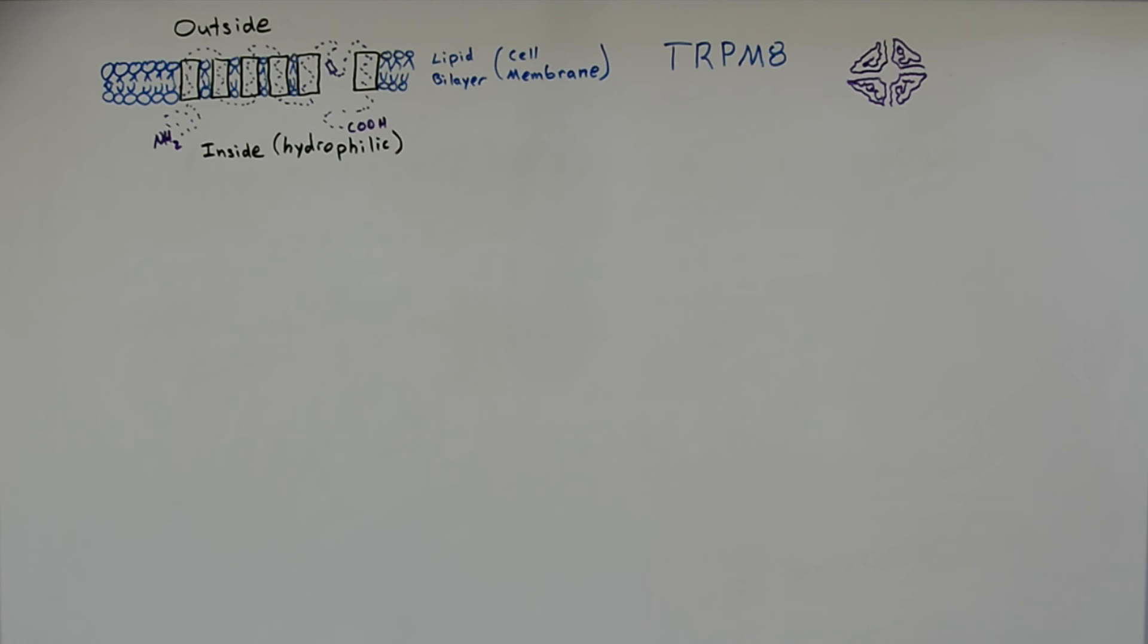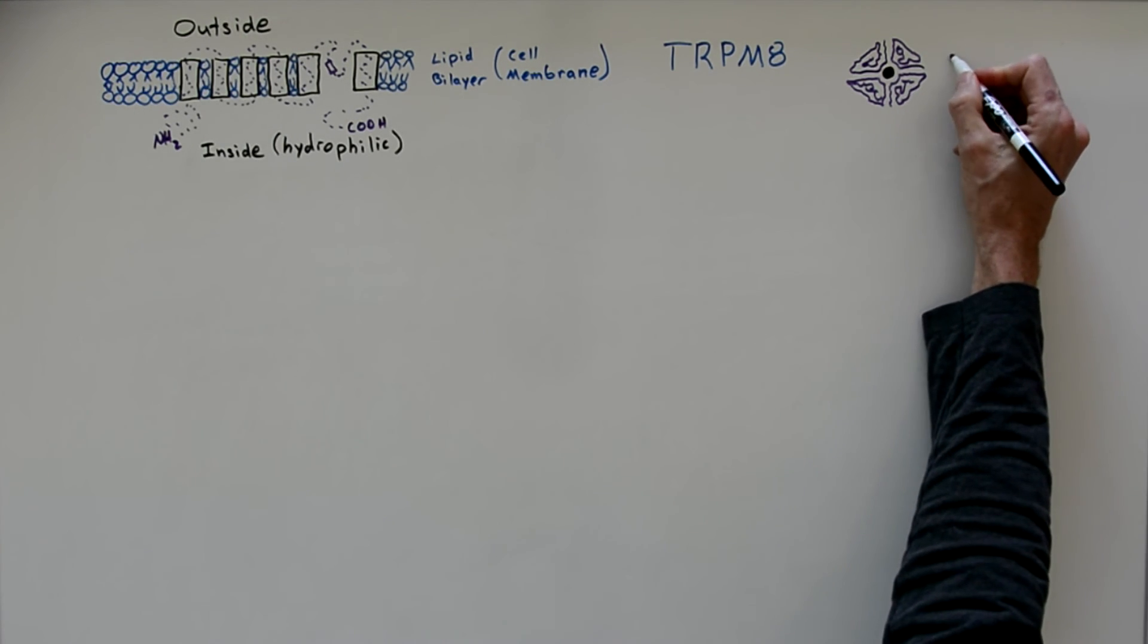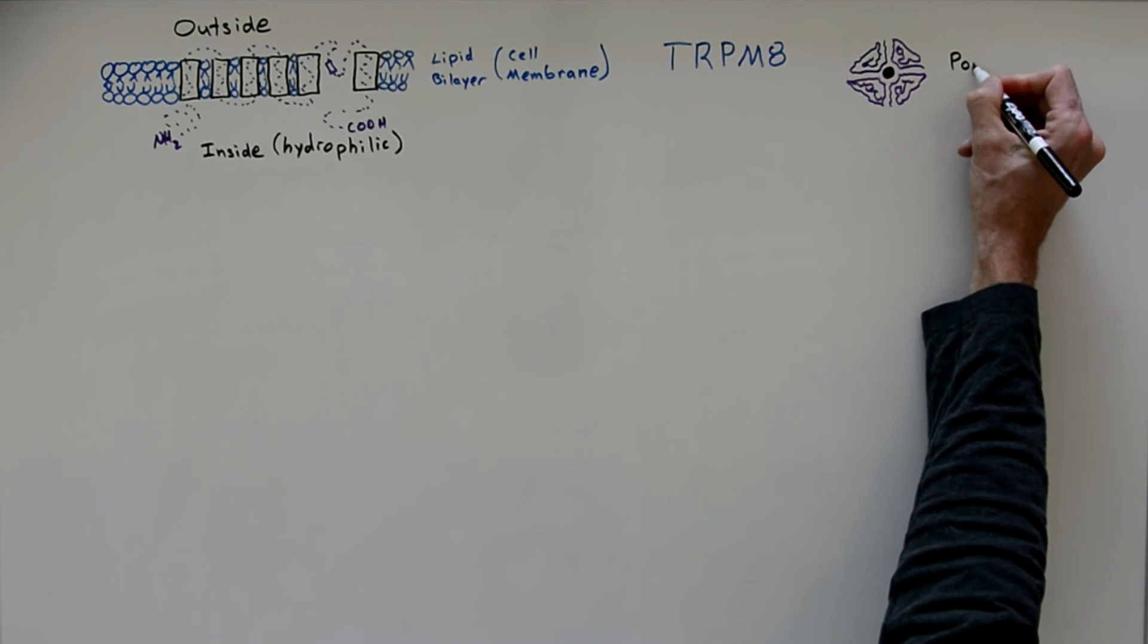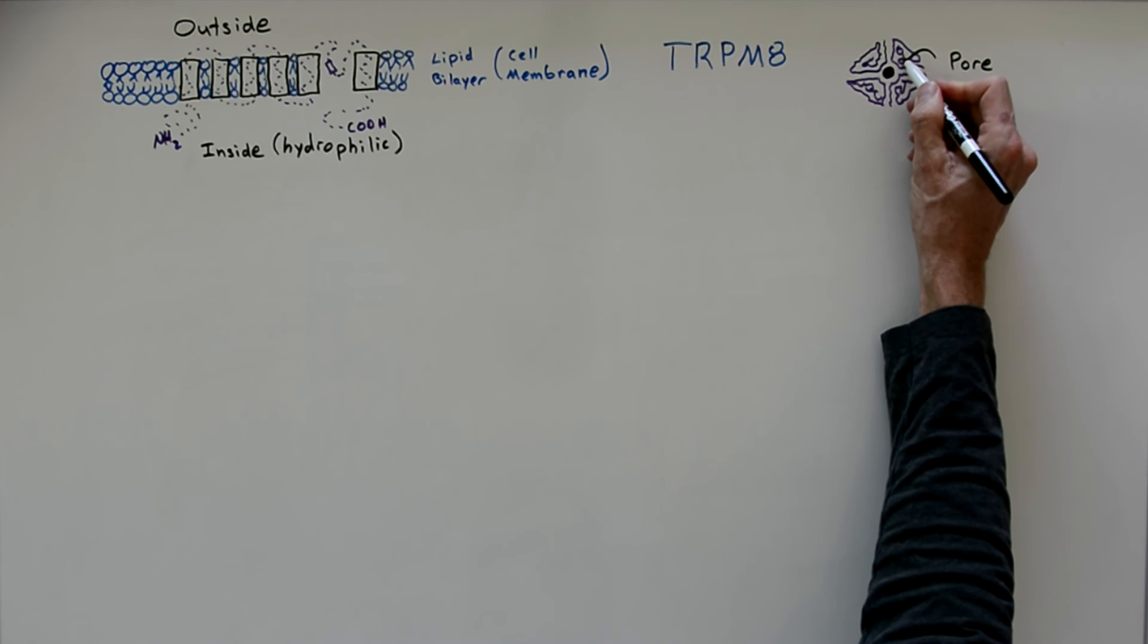Okay, let's dive into how the TRPM8 molecule starts an action potential in the nerve cell. So here inside in the middle of the tetramer is the pore. The pore will let the cations from outside the cell inside the cell.